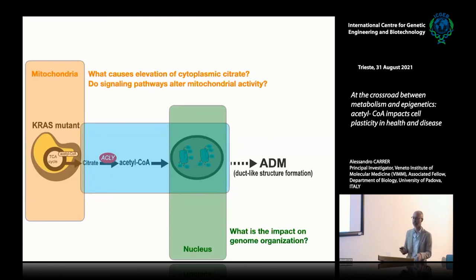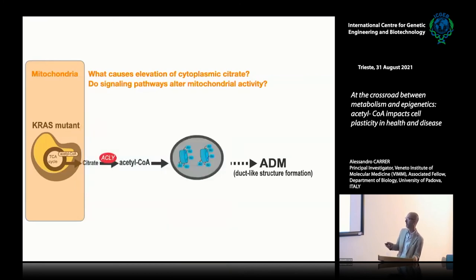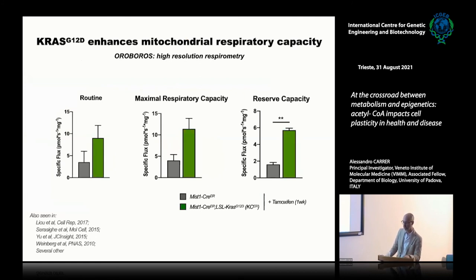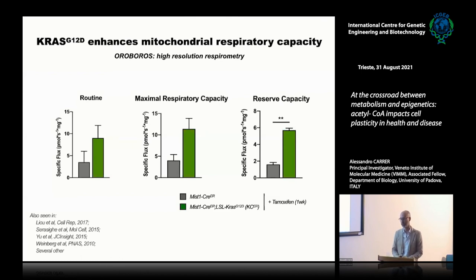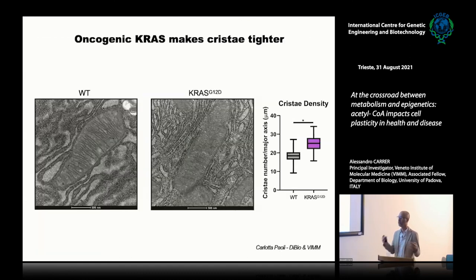We started to address these questions right when I started my lab. To understand what happens to mitochondrial metabolism when KRAS is mutated, we used a mouse model in which oncogenic KRAS can be activated by tamoxifen injection specifically in acinar cells. Using high-resolution respirometry, we saw that mitochondrial metabolism is actually improved — in particular there is a very significant increase in the spare respiratory capacity. This aligns well with a number of previous reports.